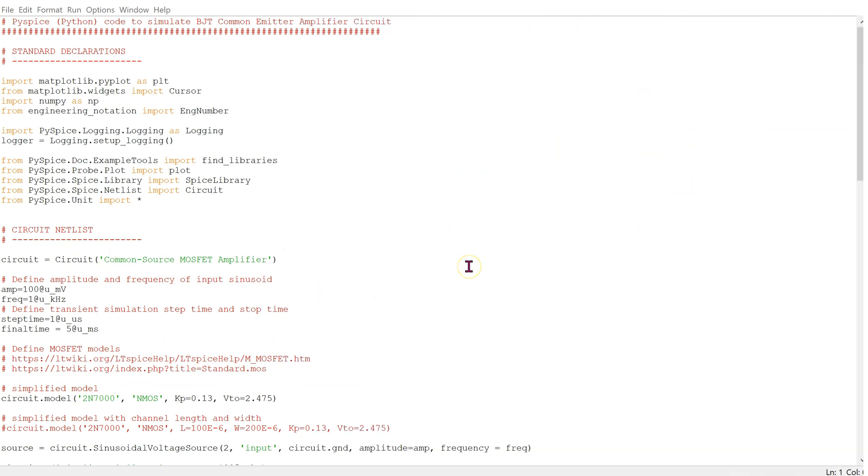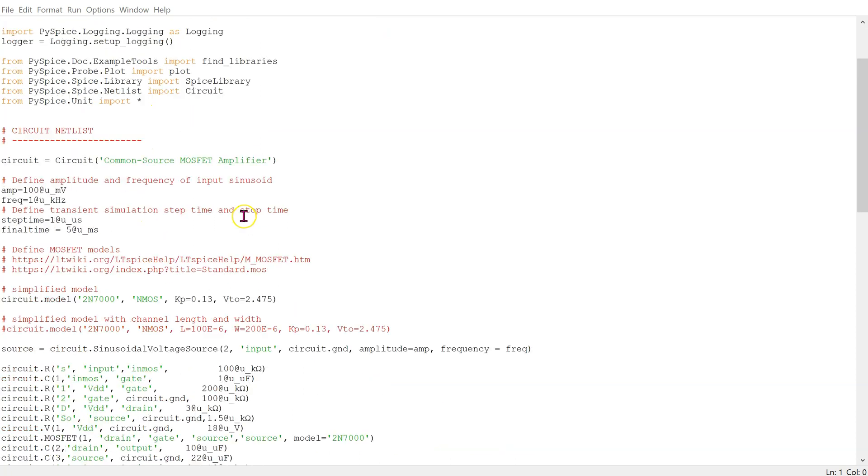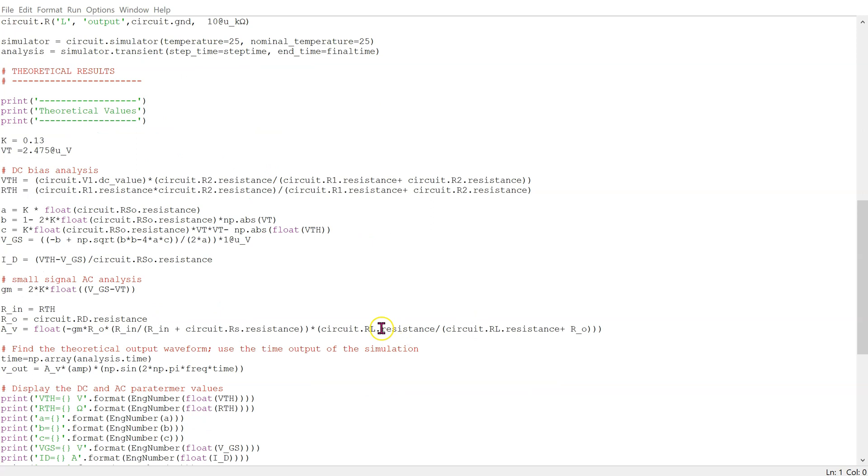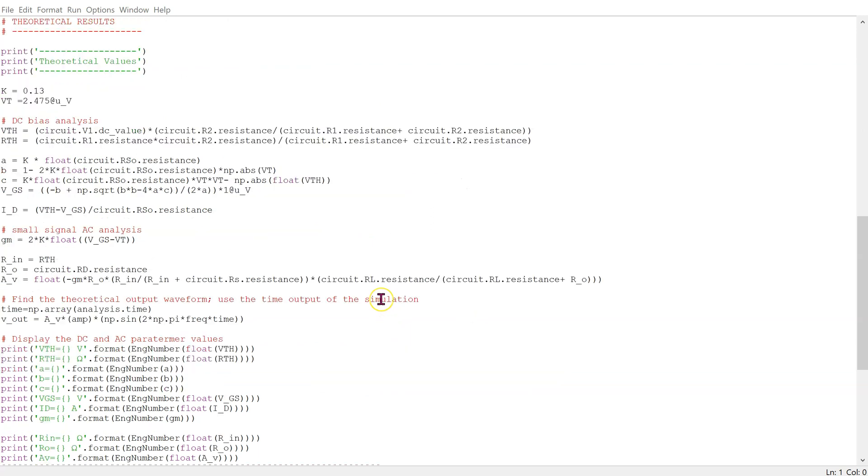This is the complete PySpice code to simulate the MOSFET amplifier circuit. We have standard declarations at the top followed by the circuit netlist. Using the standard techniques covered in introductory electronics textbooks, we can carry out the theoretical DC bias and small signal AC analysis for this circuit. We use the quadratic approach in the DC bias analysis.